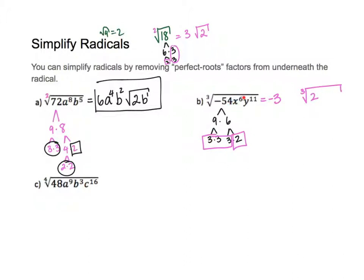Now the variables. x is to the 6th power: 6 divided by 3 gives me 2, so x squared outside. y is to the 11th power: how many times does 3 go into 11? Three times, so y to the 3rd goes outside. How many y's are left over? 11 minus 9 is 2, so y squared goes back inside the cube root.